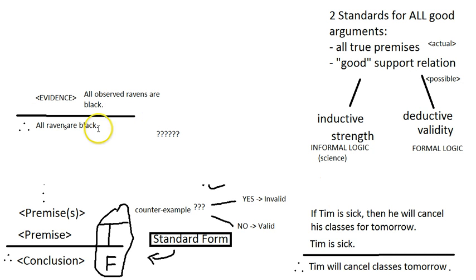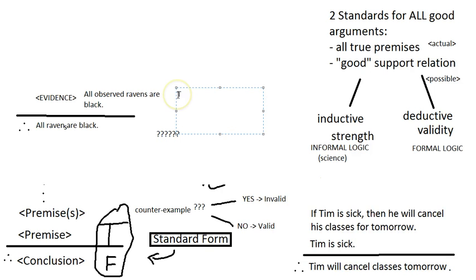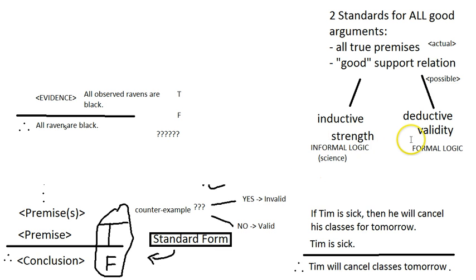Notice 'all ravens' includes both observed and unobserved ravens, not just the observed ones. If we hold this up to the standard of deductive validity: can I conceive of all the observed ravens being black and yet not all ravens being black — i.e., there's at least one raven that's not black? Yes — maybe there's a rainbow-colored raven hiding somewhere that no one's ever seen. It's possible. The truth of the premises does not provide a logical guarantee for the truth of the conclusion, which is all it takes to make it invalid. This isn't to say the argument is crappy — it's incredibly strong. It's just not the same standard as validity.